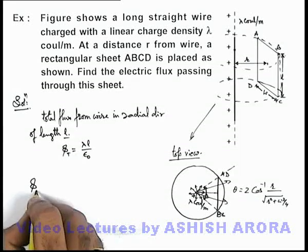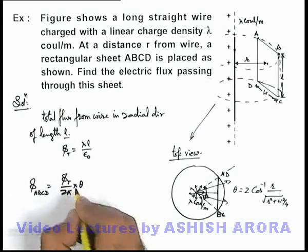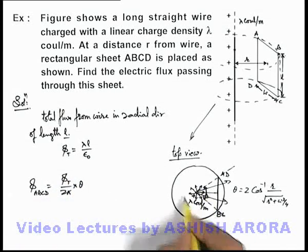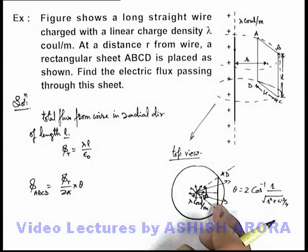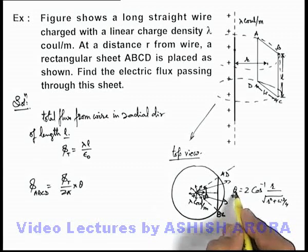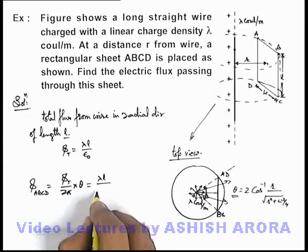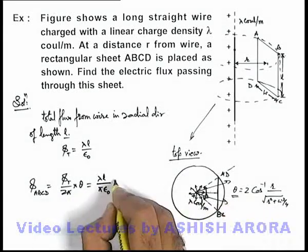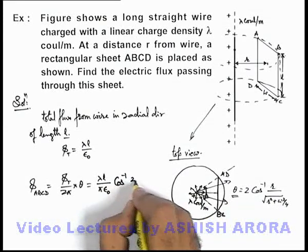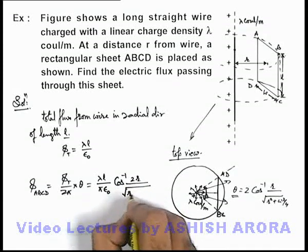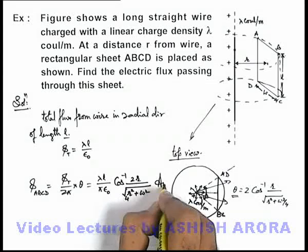And the flux passing through the plate ABCD can be written as phi total by 2 pi multiplied by the angle theta, because total flux is originated in 2 pi linear angle and the flux which is passing through the plate will be only through the angle theta. So here if we substitute the values this will be lambda l by pi epsilon not because this 2 gets cancelled out, and it'll be cos inverse of—if we just simplify the result it'll be 2r by root of 4r square plus w square. That'll be the answer to this problem.